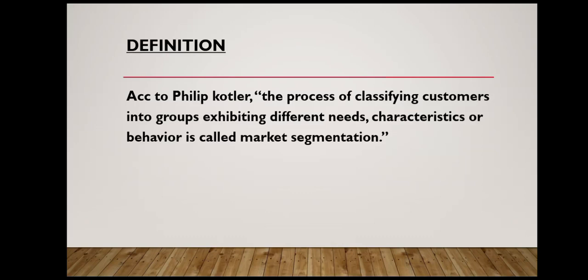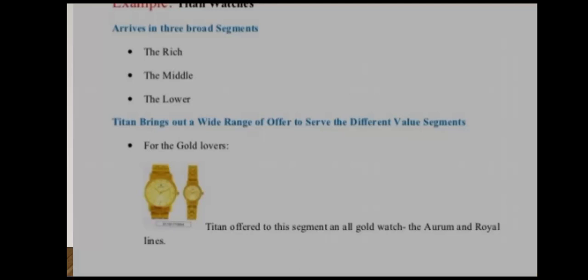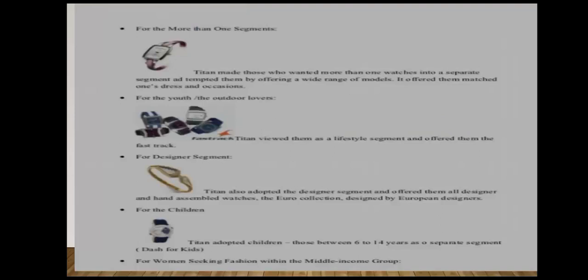For example, the Titan brand — a sub-brand of Tata — arrives in three broad segments: the rich, the middle, and the lower. Wide ranges of products are offered to various segments. For gold lovers, Titan offered the Oram and Royal lines. For those wanting more than one watch with different features and styles, separate options were created. For young people and youth, Titan focused on Fast Track.